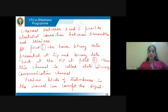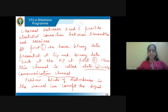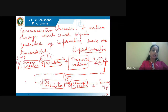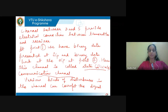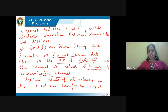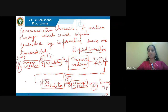Coming to points 1 and 7, we call the entire span from point 1 to 7 the discrete communication channel because the input at point 1 is binary and the output at point 7 is also binary. So between points 1 and 7, binary data is presented at the input and binary data is received at the output. Hence, we call such a channel a discrete communication channel.